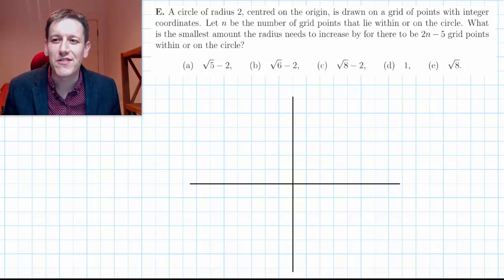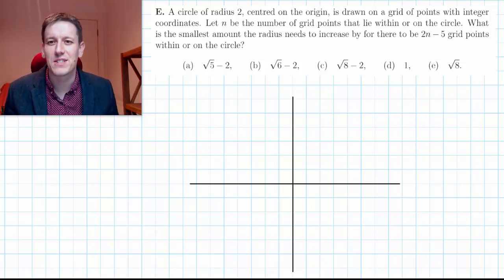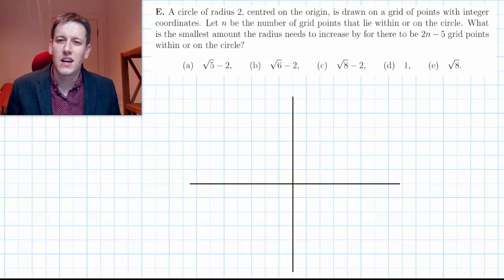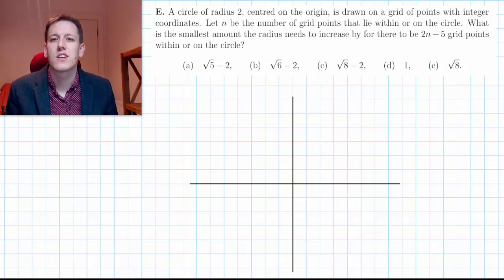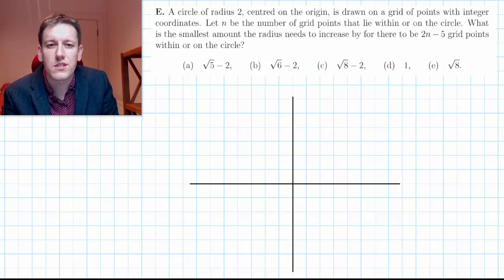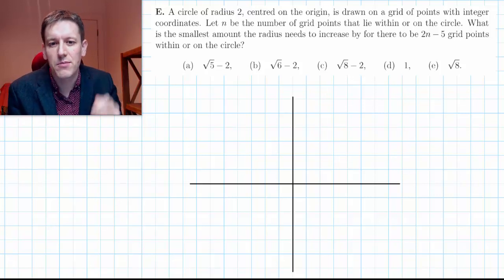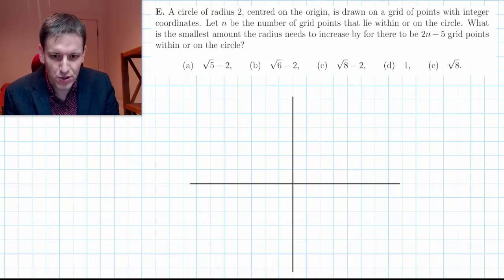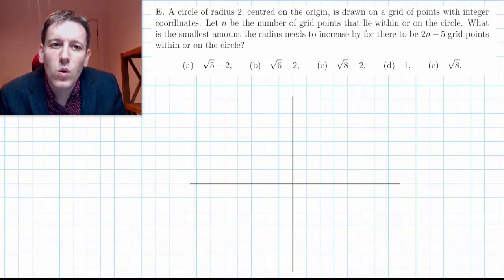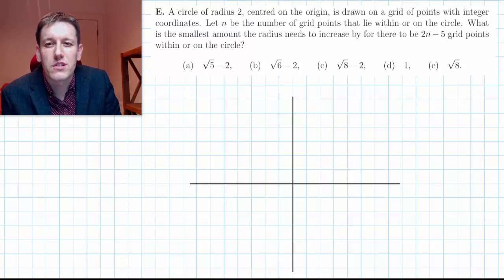This is question E from the short answer questions from the Oxford Maths Admissions Test from 2018. We've got a circle of radius 2 centered on the origin drawn on a grid of points. I've turned grid mode on for the background — if you've got plain paper in the exam you can easily draw yourself a grid. n is going to be the number of grid points that lie within or on the circle.